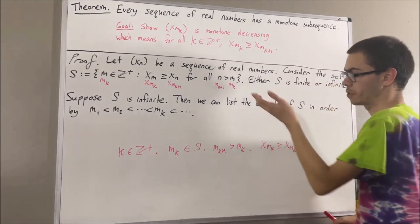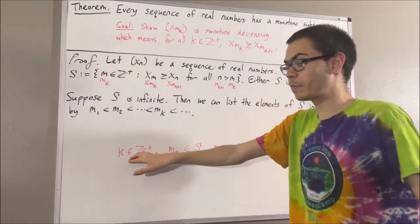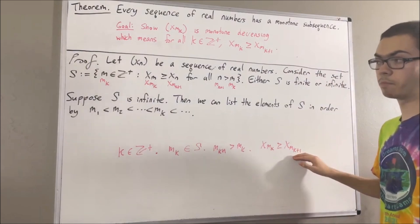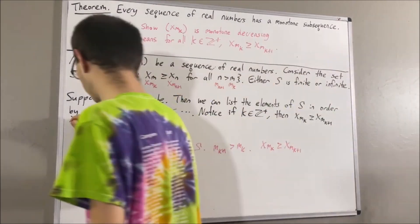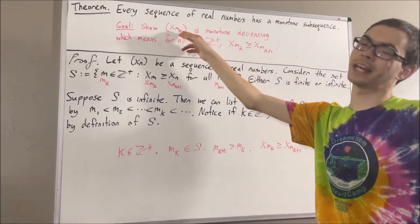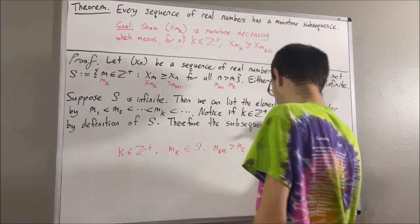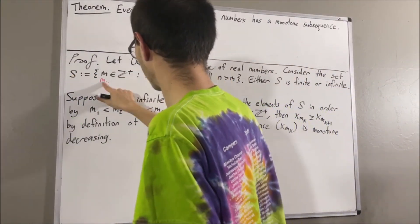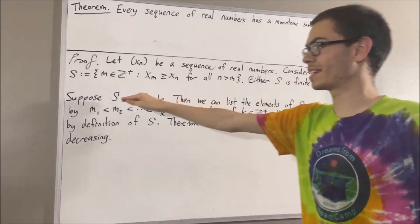Notice: if k is a positive integer, then xmk is greater than or equal to xm(k+1) by definition of S. That is precisely what it means for the subsequence xmk to be monotone decreasing. So we have found a monotone subsequence of xn, and this completes the case where S is infinite.